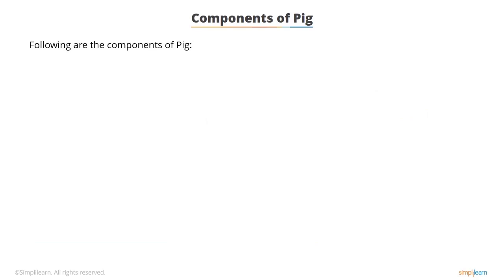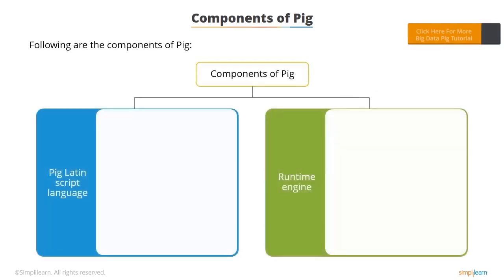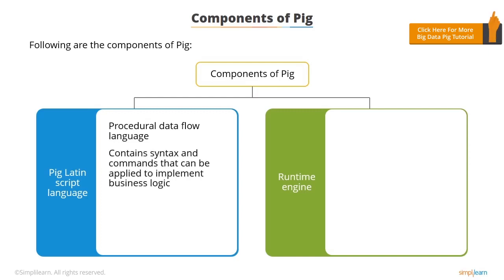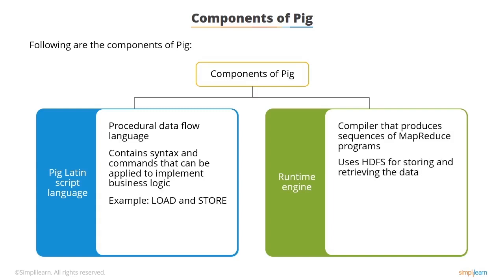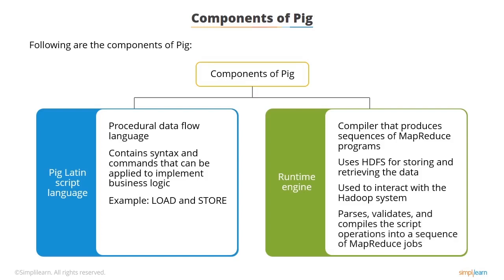There are two major components of PIG. The first is the PIG Latin script language, which is a procedural data flow language. It contains syntax and commands that can be applied to implement business logic. Examples of PIG Latin are load and store. The second is the Runtime Engine, which is a compiler that produces sequences of MapReduce programs. It uses HDFS to store and retrieve data and is also used to interact with the Hadoop system, HDFS, and MapReduce. The Runtime Engine parses, validates, and compiles the script operations into a sequence of MapReduce jobs.